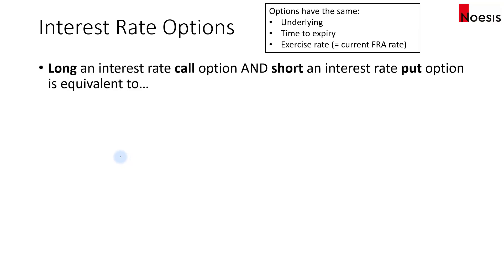In this video, we are going to look at the different equivalences when we combine different types of interest rate options or different types of swaptions. So when we long an interest rate call option and short an interest rate put option, these options have the same underlying interest rate, the same time to expiry, and the same exercise rate, which is the current forward rate agreement rate.